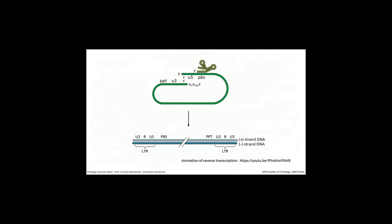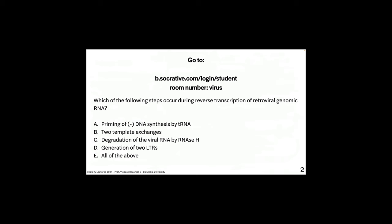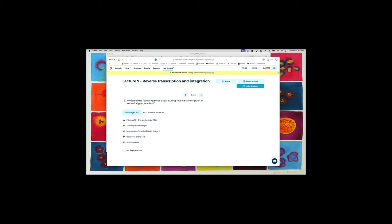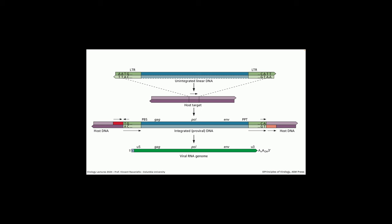Because transcription initiates within the LTR, the LTR is lost, which is why it has to be rebuilt. An animation is available that puts this in animated form to help visualize it. [Quiz question: which steps occur during reverse transcription of retroviral genomic RNA? Answer: all of the above — priming of minus DNA synthesis by tRNA, two template exchanges, degradation of the viral RNA by RNase H, and generation of two LTRs.]